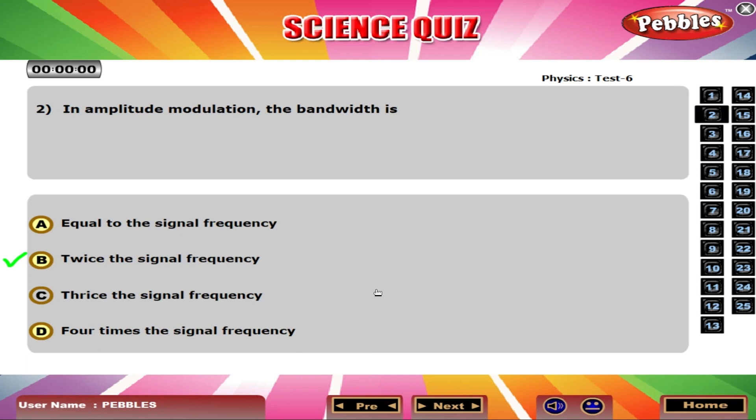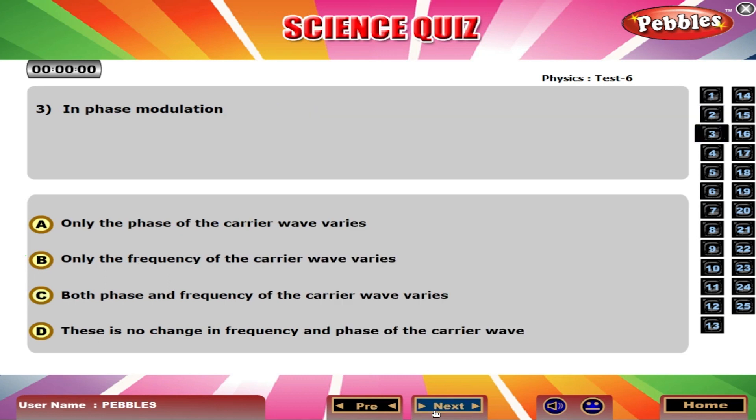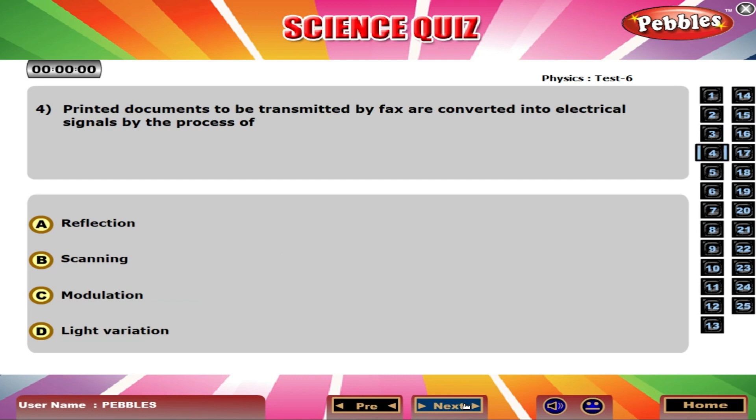twice the signal frequency. In phase modulation both phase and frequency of the carrier wave varies. Printed documents to be transmitted by fax are converted into electrical signals by the process of scanning.